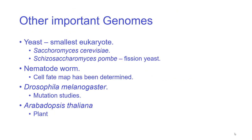Other important sequenced genomes include yeast, one of the smallest eukaryotes. There are two types: Saccharomyces cerevisiae and Schizosaccharomyces pombe. Pombe, which means fish in Swahili, is the model organism for understanding cell division. Between the two yeasts there are gene duplication events — large parts of the genome have been copied, meaning one has a much larger genome but effectively they have a very similar number of genes.